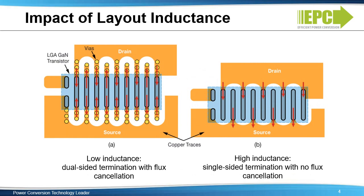A limitation of basic modeling for EGAN devices is that for the land grid array or ball grid array configurations with virtually no packaging inductance, layout inductance becomes dominant and the layout method interacts with the resulting packaging inductance. Since layout dependent inductance cannot be included in a device or package level model, the parasitic inductance needs to be added as an additional system component for accurate system modeling.